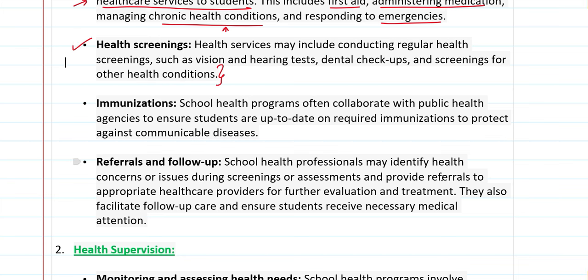Then, immunization. In school health programs, they collaborate with public health agencies and services. Where immunization is necessary, and with parents' permission, facilities are provided for immunization, so that if a communicable disease spreads, students are protected.